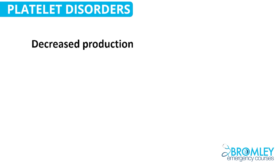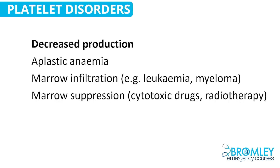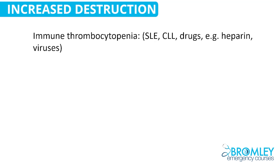Looking at platelet disorders, a number of conditions can cause decreased production — aplastic anemia, or anything that infiltrates the bone marrow or suppresses it, such as chemotherapy agents. In addition, things that destroy platelets, particularly immunological mechanisms — for example, collagen vascular diseases like SLE can lead to immunological destruction of platelets. Heparin causes a condition known as heparin-induced thrombocytopenia, which has an immunological basis; patients can develop antibodies against platelets as a result of heparin therapy.